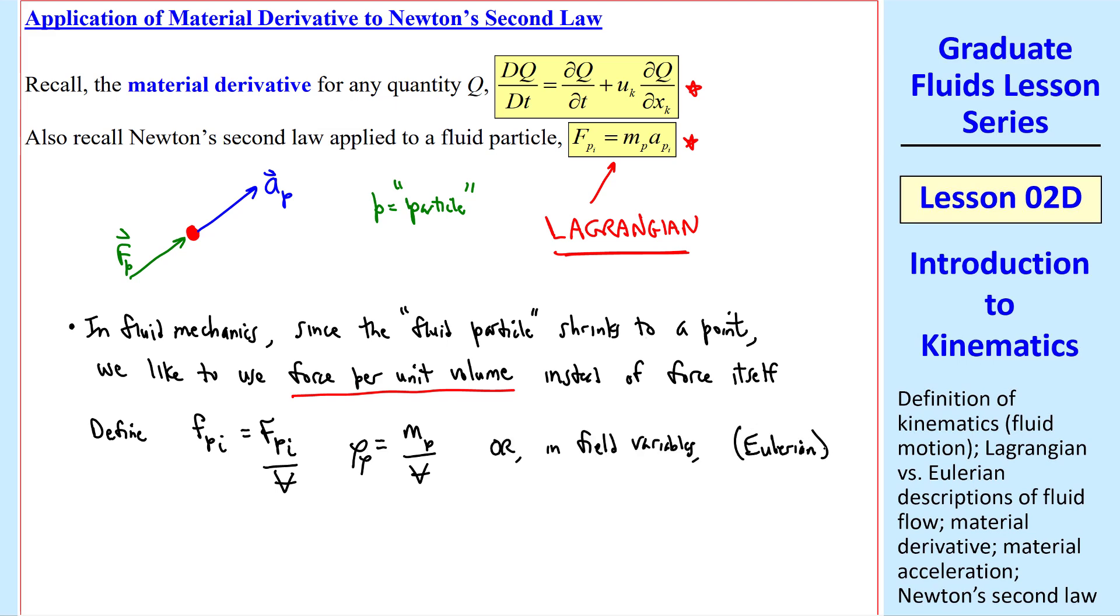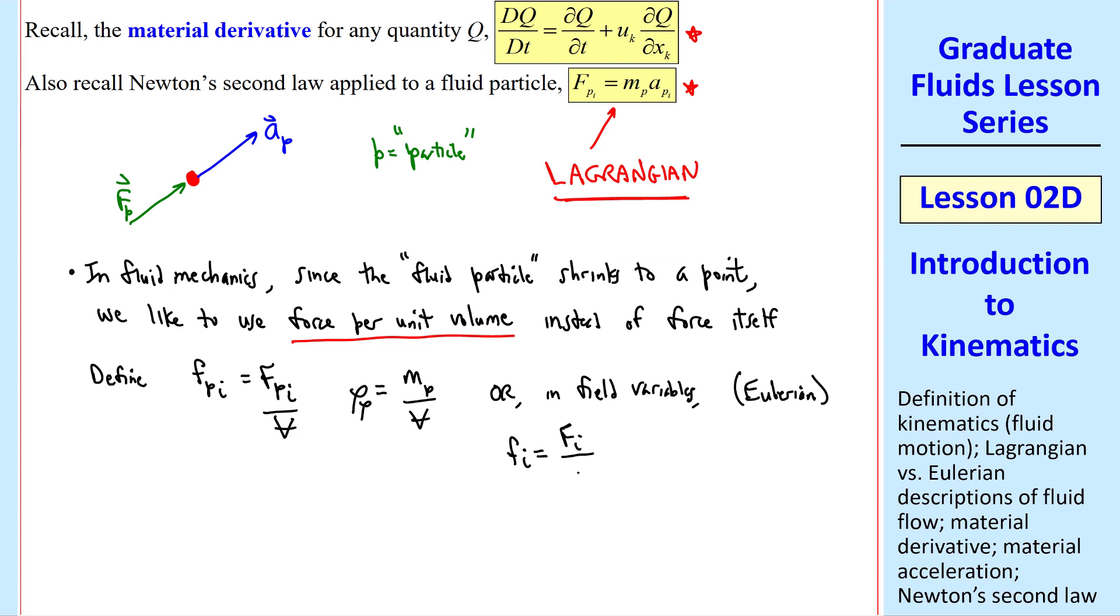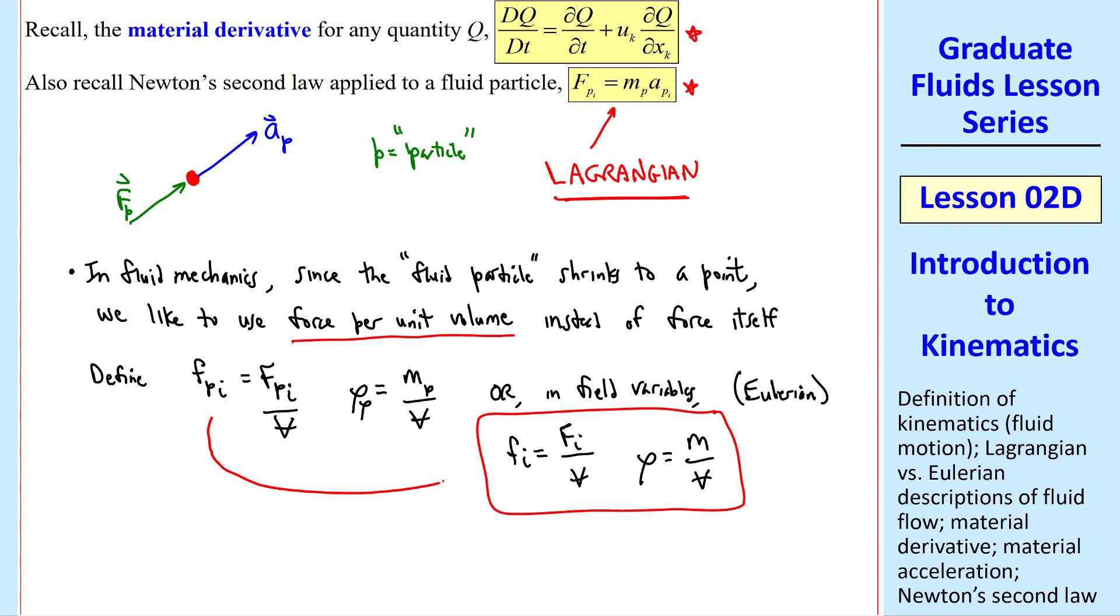Or in field variables, the Eulerian description, lowercase fi is uppercase fi over volume. And rho is m over volume. And as we pointed out, when we do this transformation between Eulerian and Lagrangian, fpi and fi are the same, since we're talking about this point and whatever fluid particle happens to be there at that instant in time. It has the same force and acceleration.